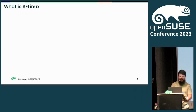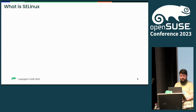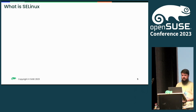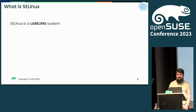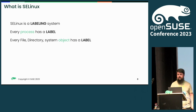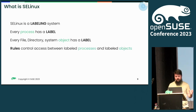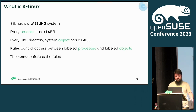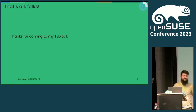If you have seen any SELinux presentations by, for example, Dan Walsh, you know what's coming. I'm going to give you a theoretical definition that will make you all SELinux experts in one slide. SELinux is a labeling system. Every process has a label. Every file, directory, and system object has a label. Rules control access between labeled processes and labeled objects. And the kernel enforces the rules. That's everything SELinux does.